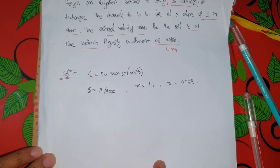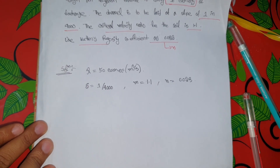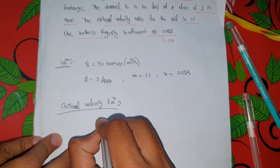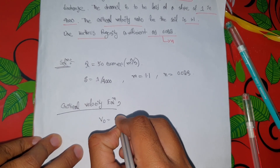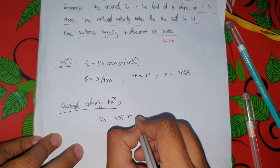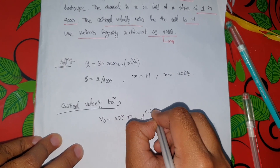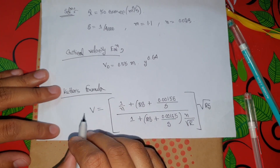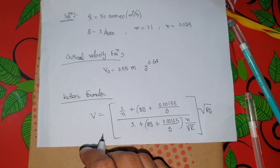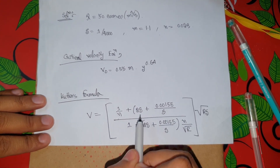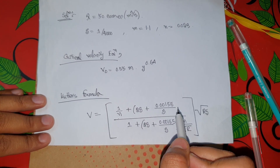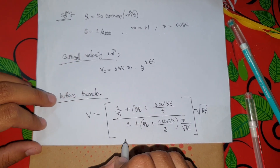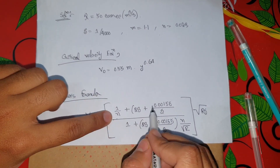The critical velocity formula is: V equals 0.55 m times y to the power 0.64. We also have to write Cutter's formula: V equals 1 by N plus 23 plus 0.00155 divided by S, all multiplied by root R times S.